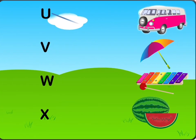U is for Umbrella. V is for Van. W is for Watermelon. X is for Xylophone.